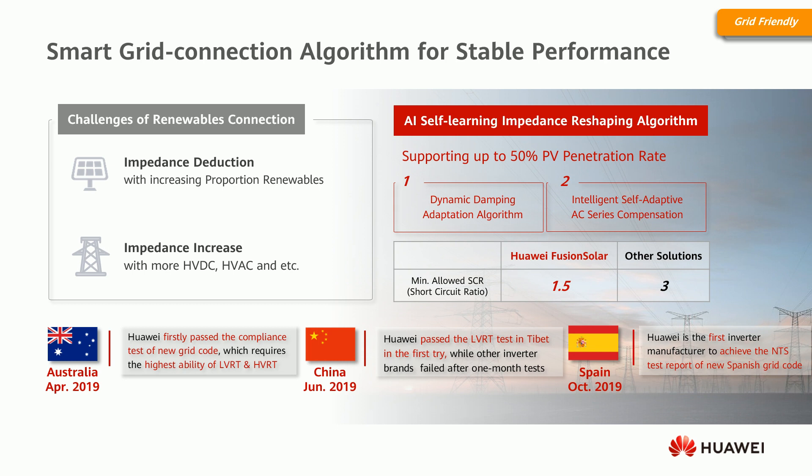Due to the high penetration of solar power worldwide, inverter manufacturers are facing increasingly strict requirements from grid operators. Huawei was one of the first to pass new grid code tests — for example, in Australia, Huawei was the first to pass the new grid code requiring the highest low voltage ride-through and high voltage ride-through capability. In Spain, a new grid code called NTS3 was introduced, and Huawei was the first to achieve this NTS3 test report.